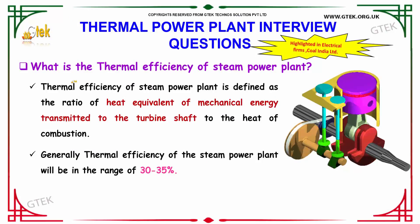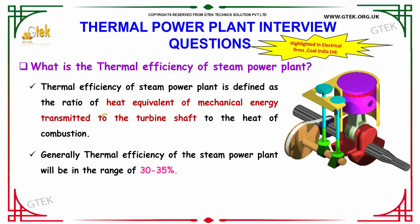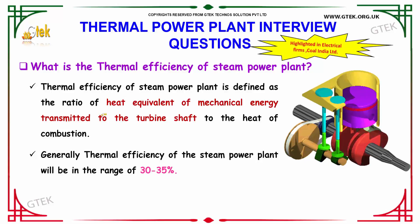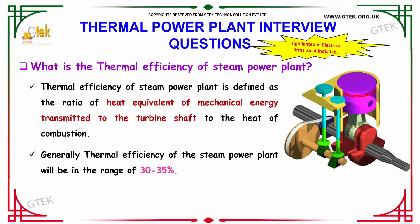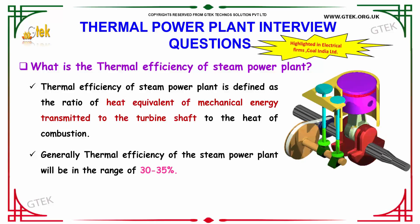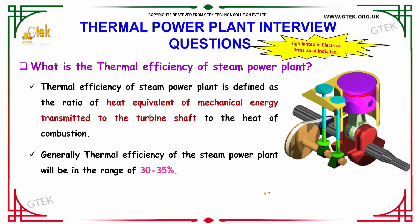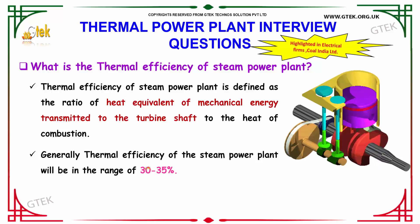What is the thermal efficiency of the steam power plant? The thermal efficiency of the steam power plant is defined as the ratio of heat equivalent of mechanical energy transmitted to the turbine shaft to the heat of combustion. Generally, the thermal efficiency of a steam power plant would have a range of 30 to 35%.